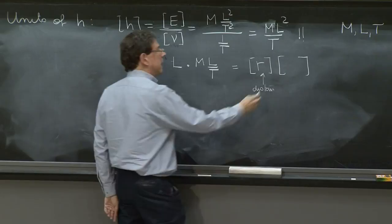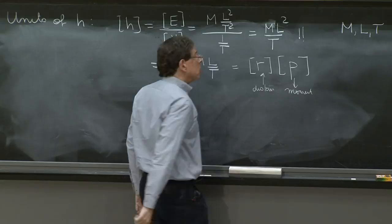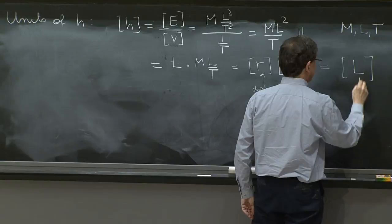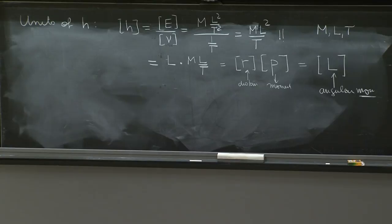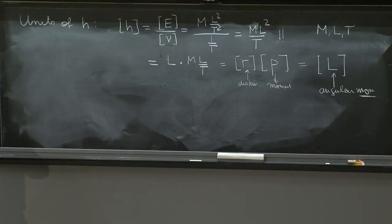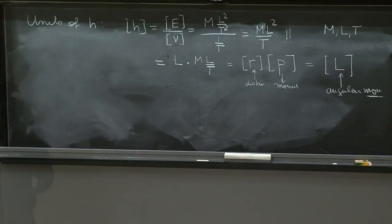And this has the units of momentum, p. So this product has the units of angular momentum. And perhaps that's the most important quantity that has the units of h bar. It's something that you should remember. h bar has units of angular momentum. That's why when people talk about a particle of spin 1 half, they say the angular momentum is 1 half of h bar. And that has the right units.